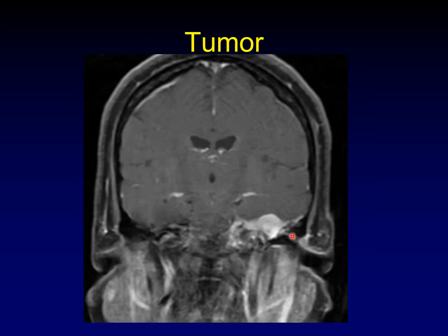This is an example of tumor causing tegman dehiscence — in this case, metastatic disease from lung cancer. But any tumor arising in this location could erode through the tegman.